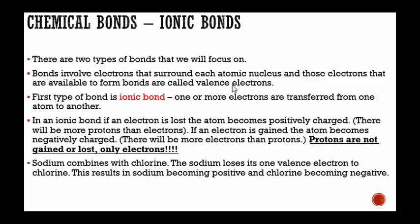Sodium combines with chlorine. The sodium loses its one valence electron to chlorine. This results in sodium becoming positive and chlorine becoming negative and it becoming stable. Notice the sodium loses its one valence electron, and because it's losing it and transferring it over to chlorine, this is what we call an ionic bond.